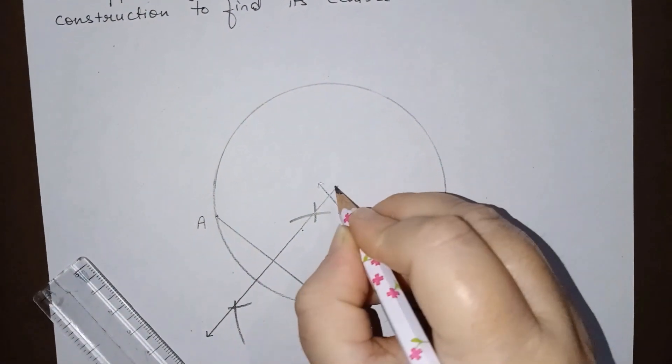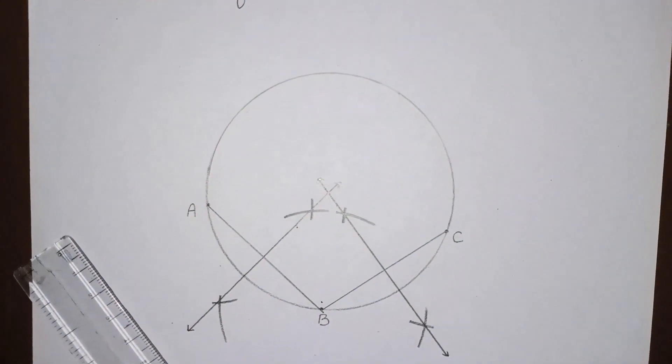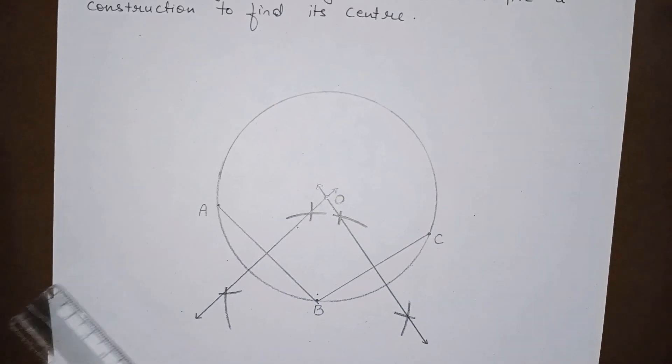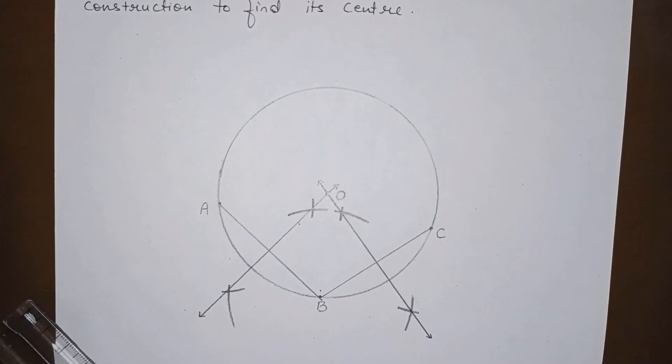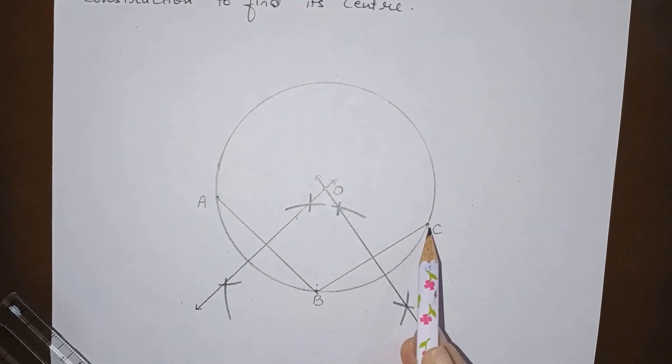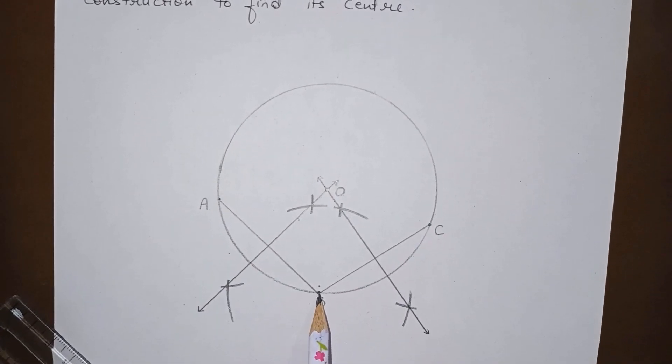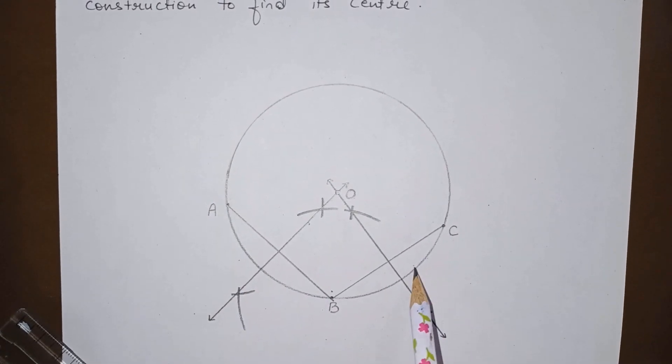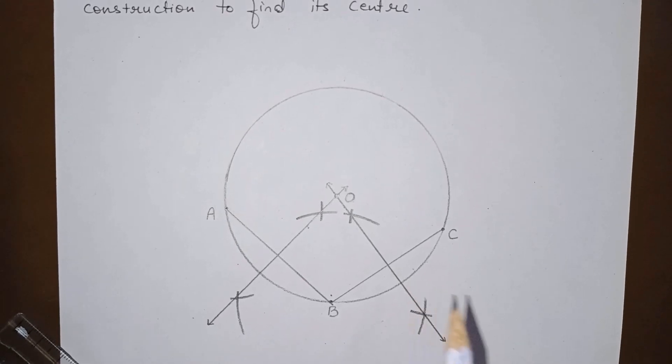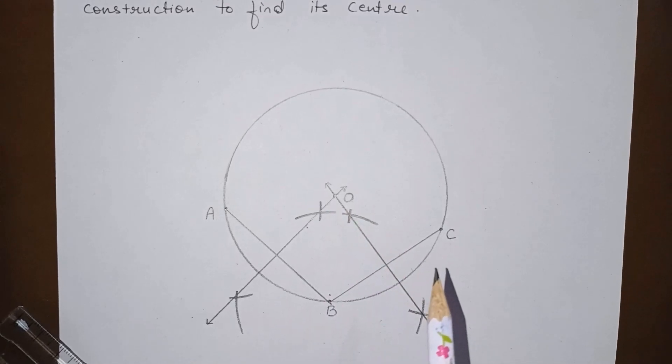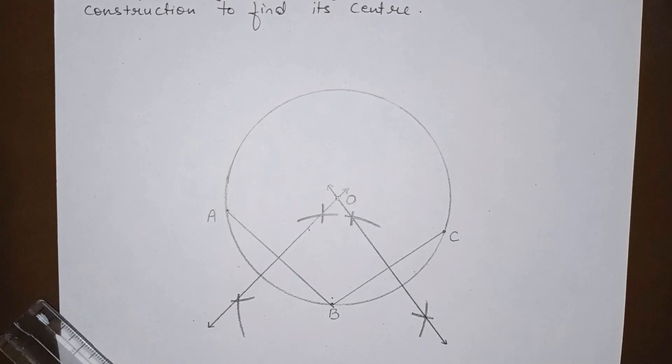And the point where these perpendicular bisectors intersect will be the center of the circle. The center of the circle is the point of intersection of perpendicular bisectors of any 2 chords of a circle. Here, I have drawn 2 chords where their common point is B. You can draw 2 separate chords also. And when you will draw 2 chords and find the perpendicular, you draw the perpendicular bisector. The point where the perpendicular bisector will intersect will be the center of the circle. Now, let us write the steps of construction.